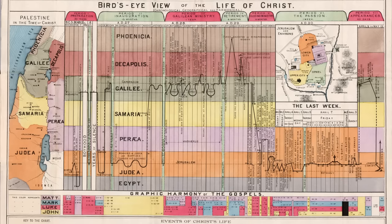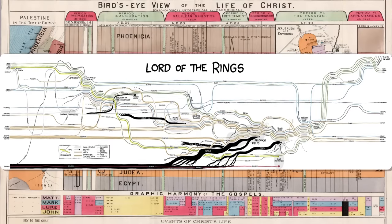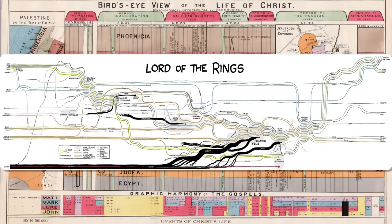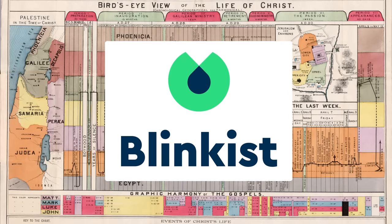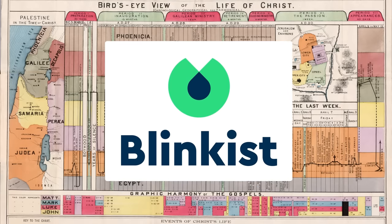It kind of reminds me of this one by the webcomic XKCD showing the movements of the various characters in Lord of the Rings. The reason why I like charts so much is that they often give you an overview of a topic or book in a way that allows you to grasp the main ideas in a relatively short amount of time. Today's sponsor, Blinkist, does the exact same thing.